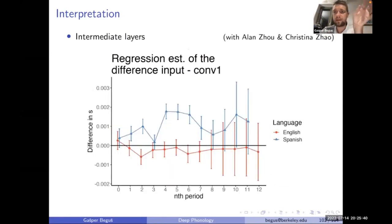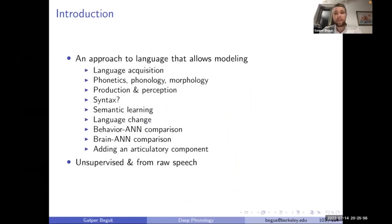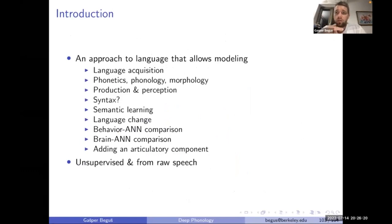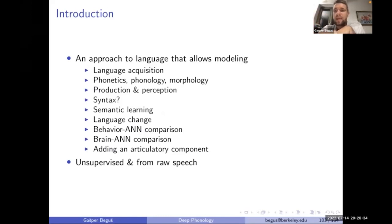This gives us an interpretable way to compare artificial neural networks and the brain — not only using correlations, but using concrete acoustic properties and seeing how they're encoded, because we can get time series data for each convolutional layer. Some evidence shows similar encoding between Spanish and English listeners in the brain experiment and Spanish and English trained models. We're working on both production and perception.